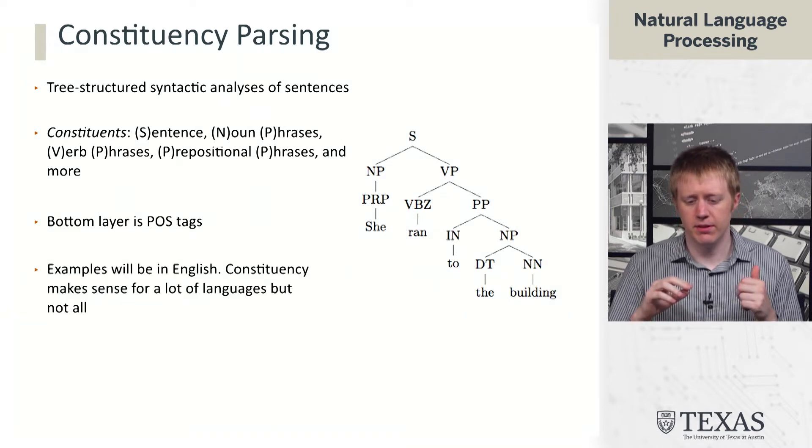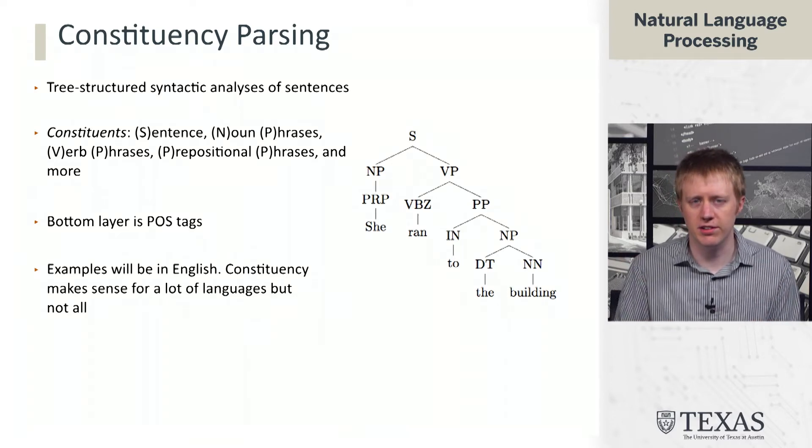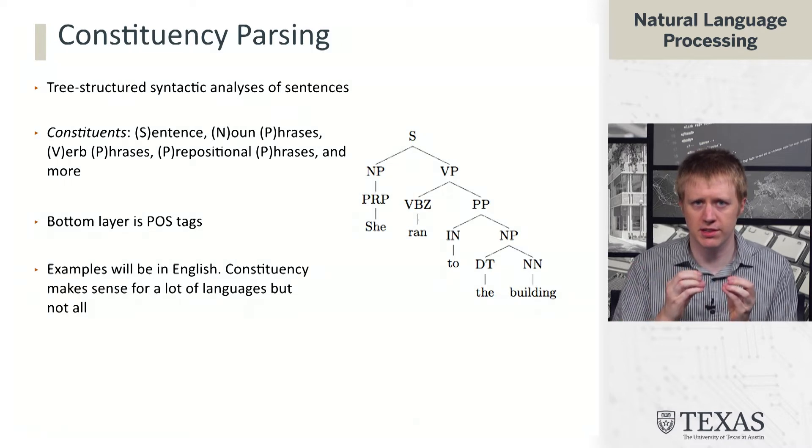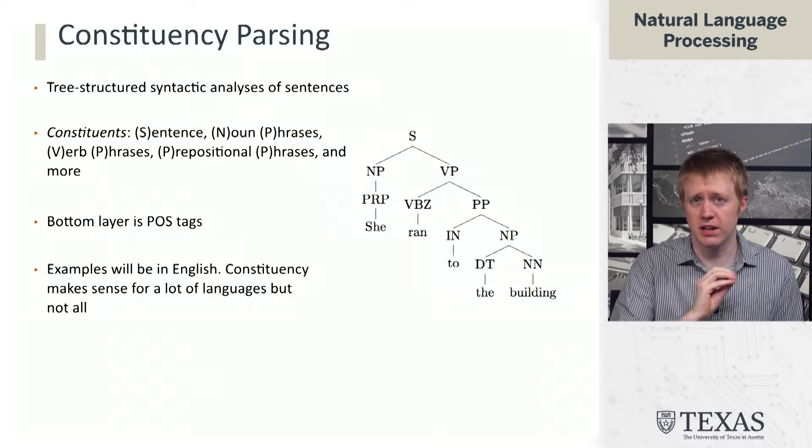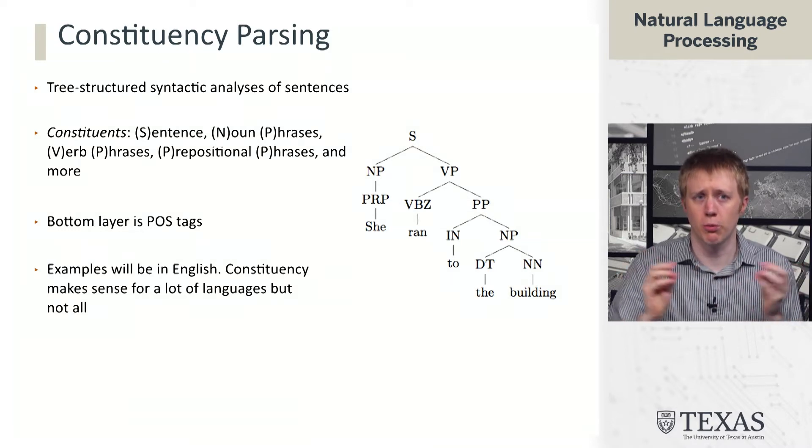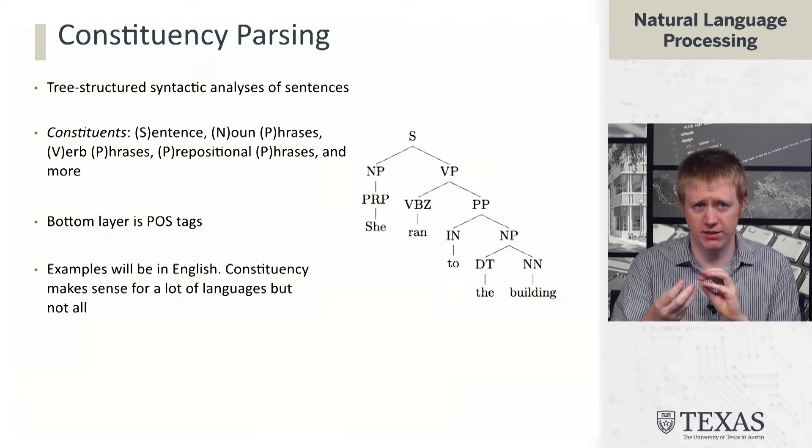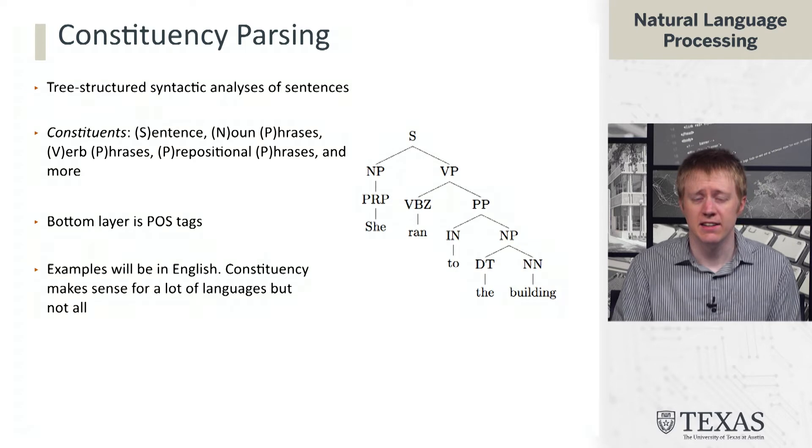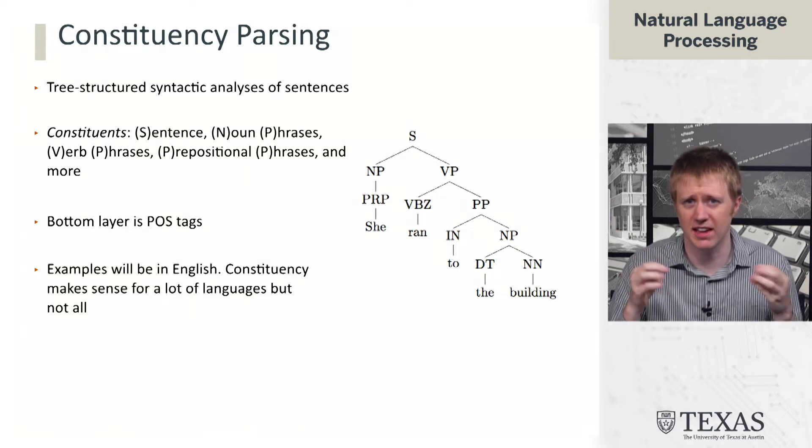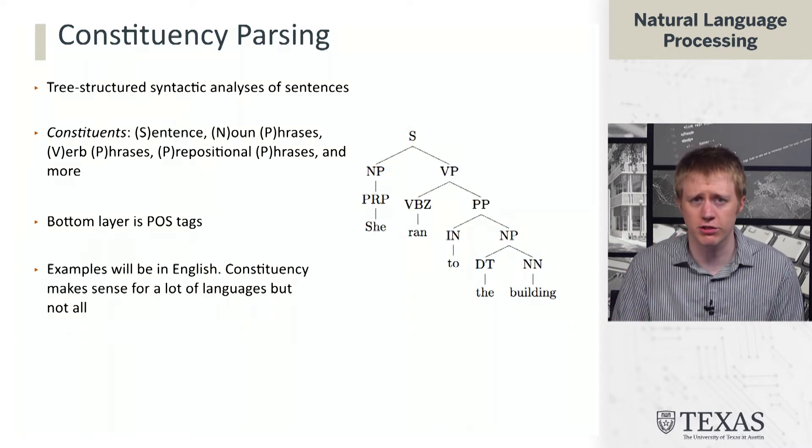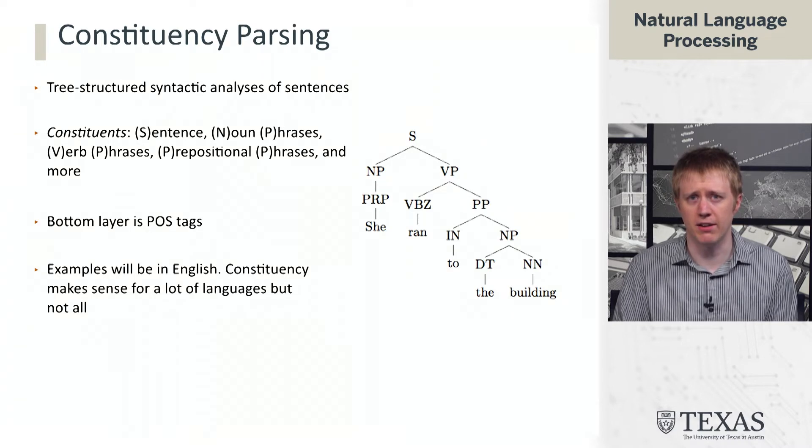Throughout these segments the examples will primarily be in English. What I'll say about constituency with respect to different languages is that there are a lot of languages that it does make sense for. There are some that it doesn't. In particular, there are languages that have much freer word order. You can put things in different places and the way you inflect the words, like suffixes and things like that, tell you the grammatical function of those words. For those languages it makes much less sense to use this kind of rigid tree structure, and the dependency grammars that we're going to talk about later are better at handling that.